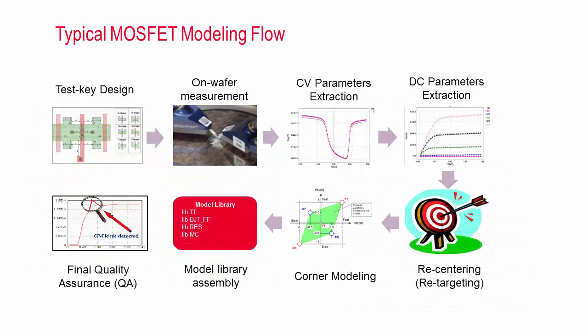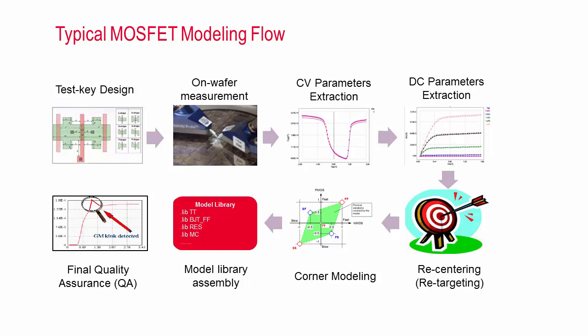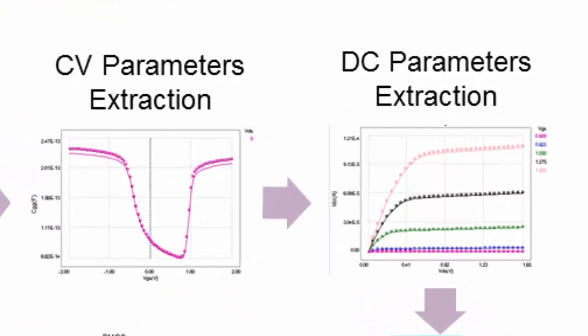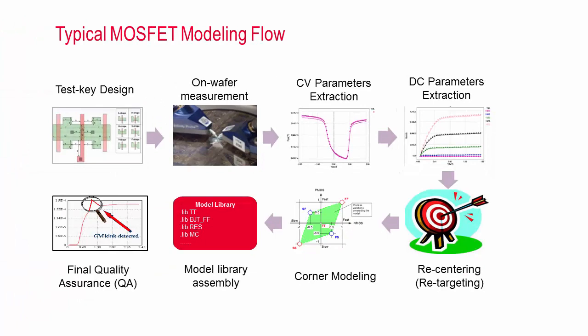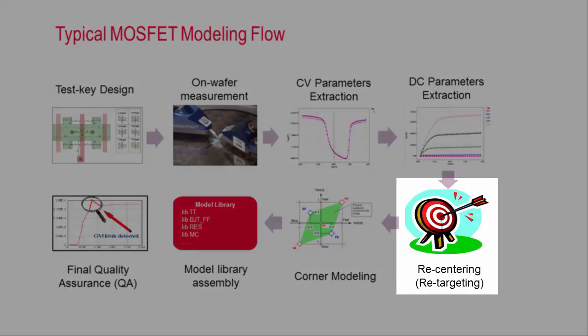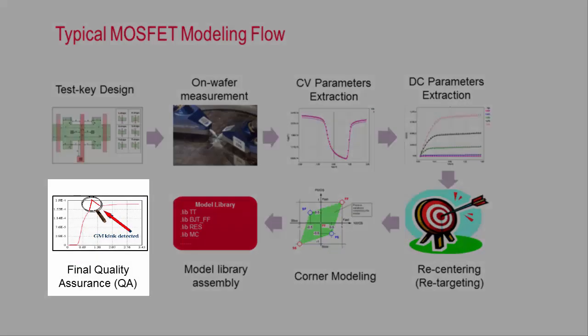A complete modeling flow starts with test key design. After tape out, wafer measurements are collected on various device geometries at different bias and temperatures. After CV and DC parameter extraction, we obtain the model card called Best Fitting. In this video, we will focus on the DC parameter extraction portion. The last four steps, recentering, corner modeling, library assembly, and the final QA will come later.